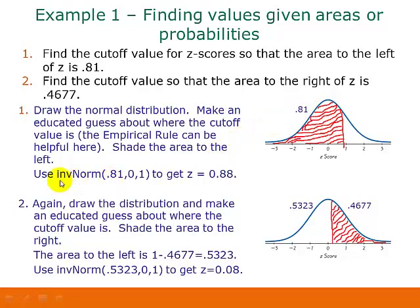So we would use the inverse norm function on the calculator. And here we put in the probability or the area, the mean, and the standard deviation. If you put this in your calculator, you should get back an answer of 0.88. So that means that this value of z right here would be 0.88.